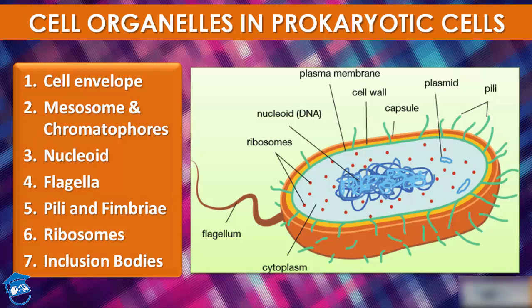In addition to the genomic DNA, many bacteria have smaller circular DNA outside the genomic DNA. These smaller DNA are called plasmids — this is extrachromosomal DNA. The plasmid DNA confers certain unique phenotypic characters to bacteria, one such character being resistance to antibiotics.